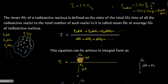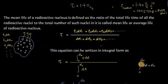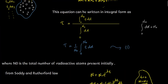We can write this summation form in integral form as: tau equals the integral from 0 to N₀ of t·dN, divided by the integral from 0 to N₀ of dN. The integration limit from 0 to N₀ of dN is defined as N₀, which is the total number of radioactive nuclei present initially. So by using this expression, we can write: tau equals (1/N₀) times the integral from 0 to N₀ of t·dN.